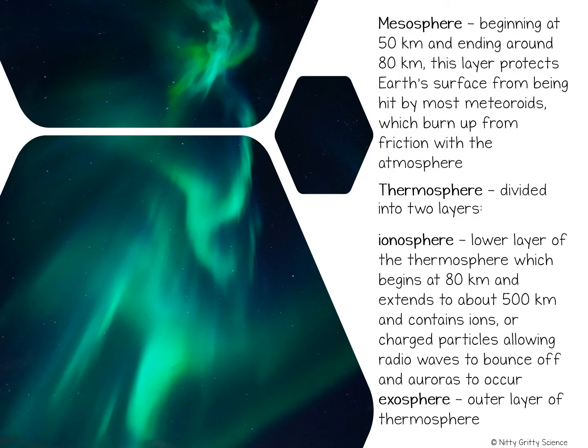The thermosphere is divided into two layers. The lower layer is called the ionosphere and extends from 80 to about 550 kilometers above Earth's surface. In this layer, molecules become electrically charged, and because of this charge these particles are called ions. Radio waves are able to bounce off these ions and back to Earth's surface, making communication possible. Particles from the sun are also able to bounce off the ionosphere, creating the brilliant light displays of the aurora borealis, also known as the northern lights.